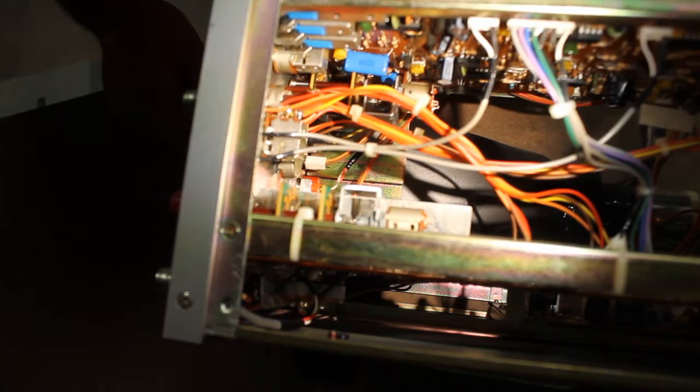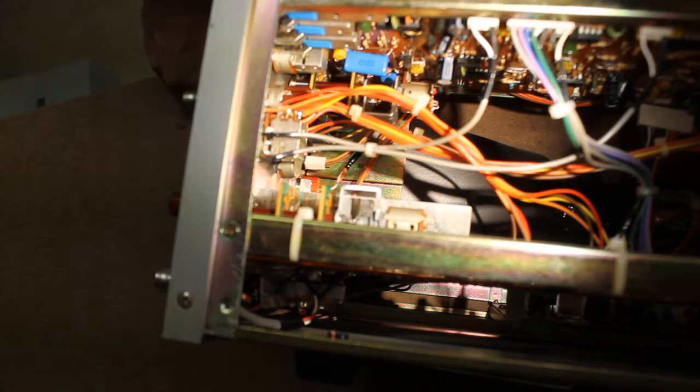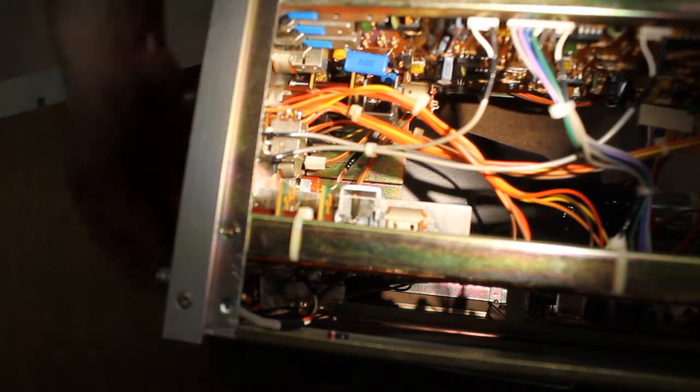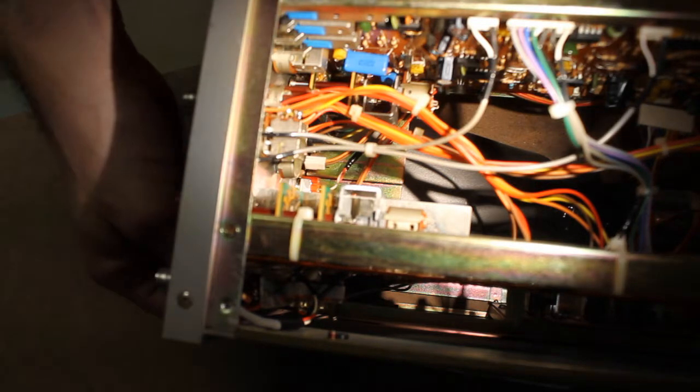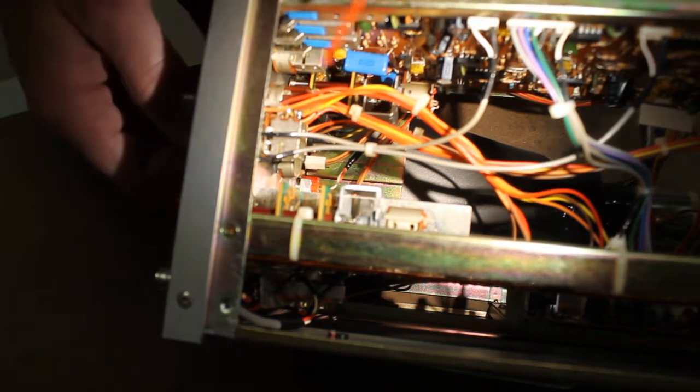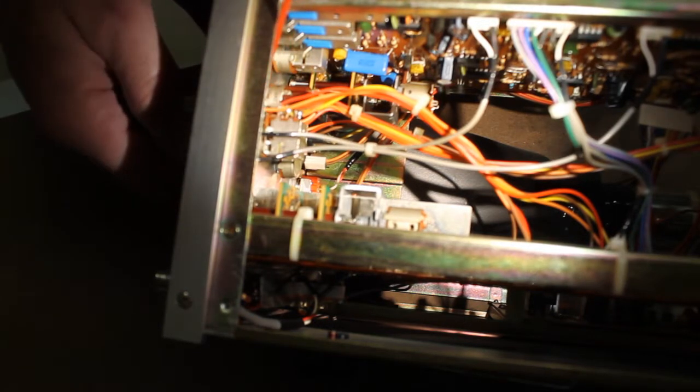So we're back. We've got the scope open and we can see the controls that are in it. What we're going to do is spray the switches and potentiometers with contact cleaner and see if we can get some of these controls to behave properly.